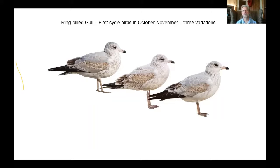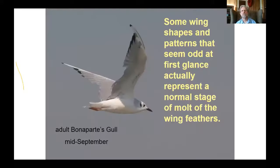Here are three young ring-billed gulls in October and November — all just a few months old. If you look at the pattern of the back and wings, they all look different because they're not molting at exactly the same rate. They're showing different amounts of wear on those feathers, which can be tricky.